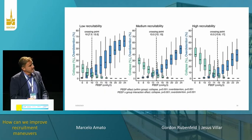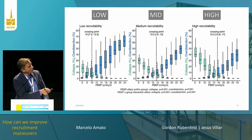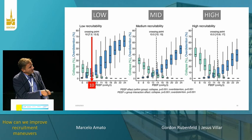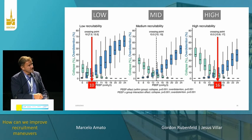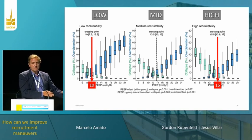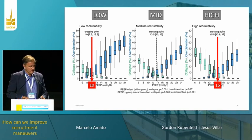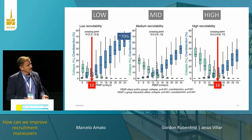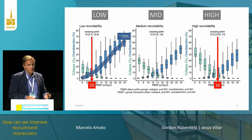Another interesting result: looking at low, mid, and high recruiters and their crossing points — 10 for low and 16 for high recruiters. This graph suggests that patients with more recruitability need higher PIP. But the reality is not like this — let me show you why.